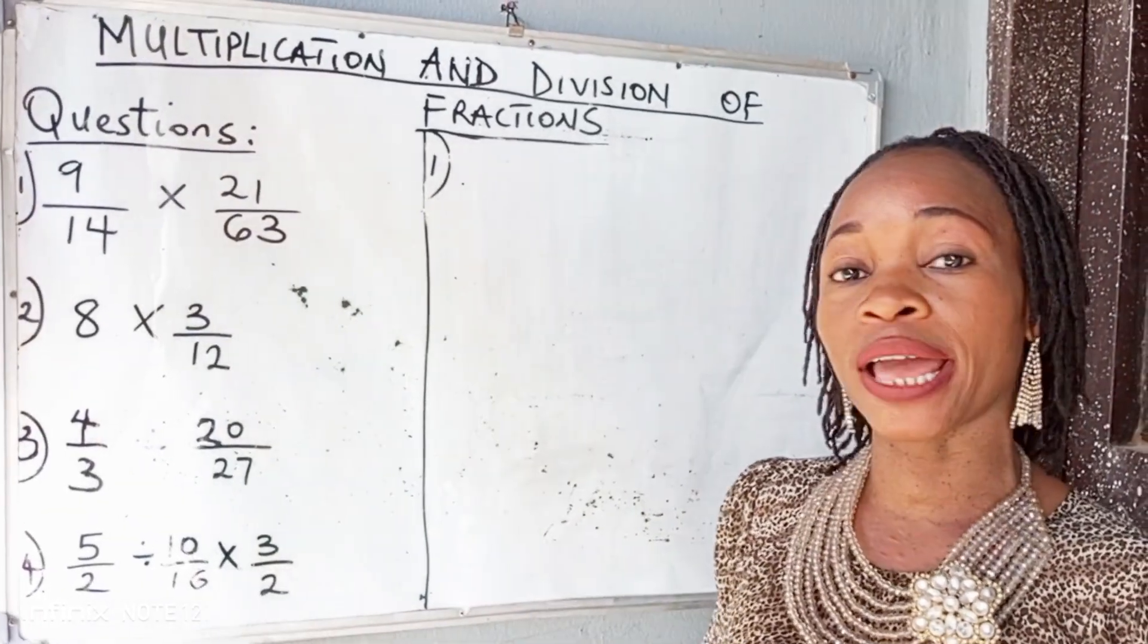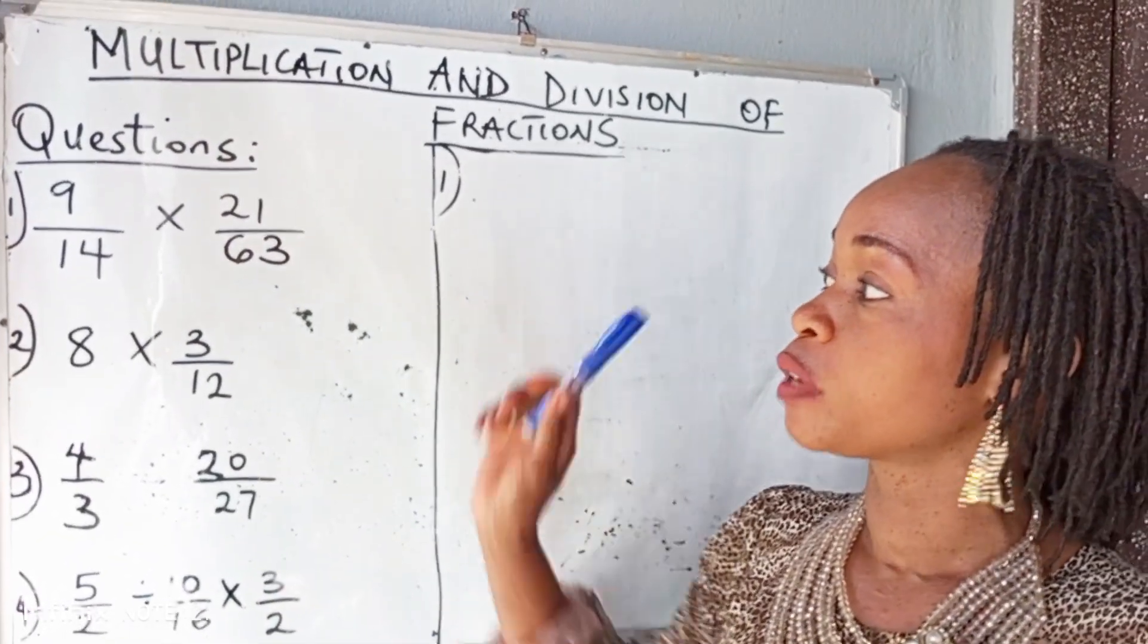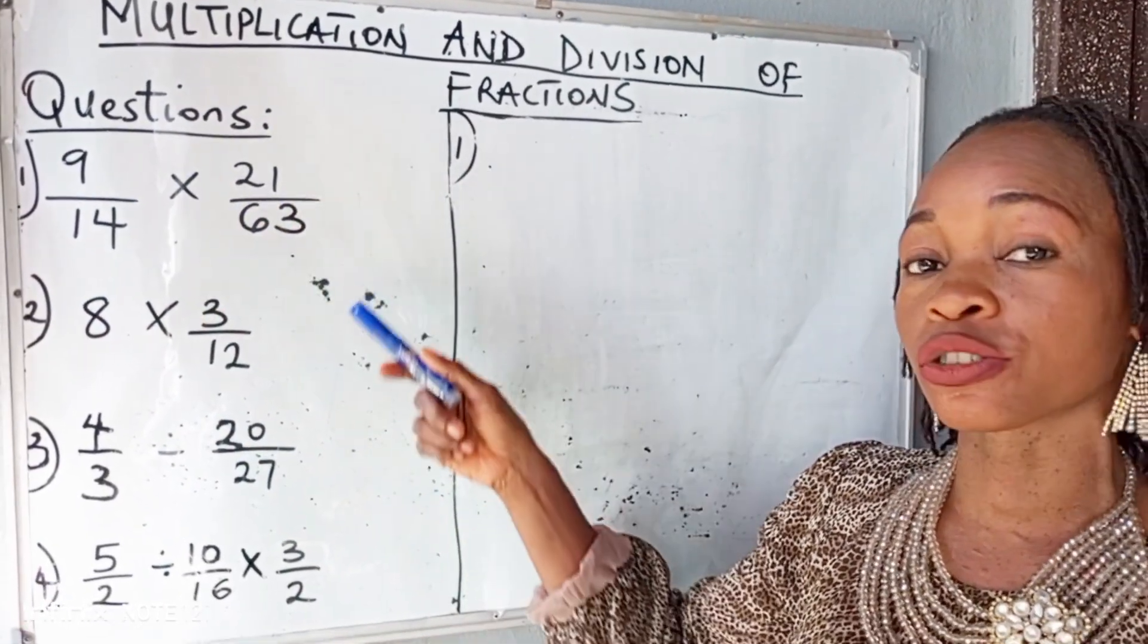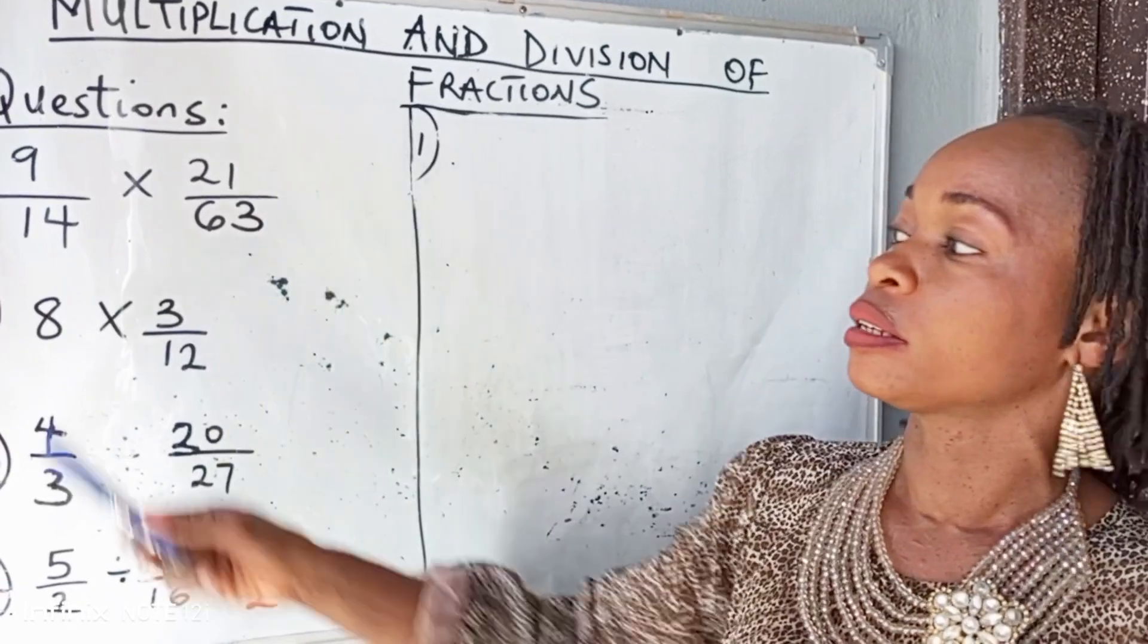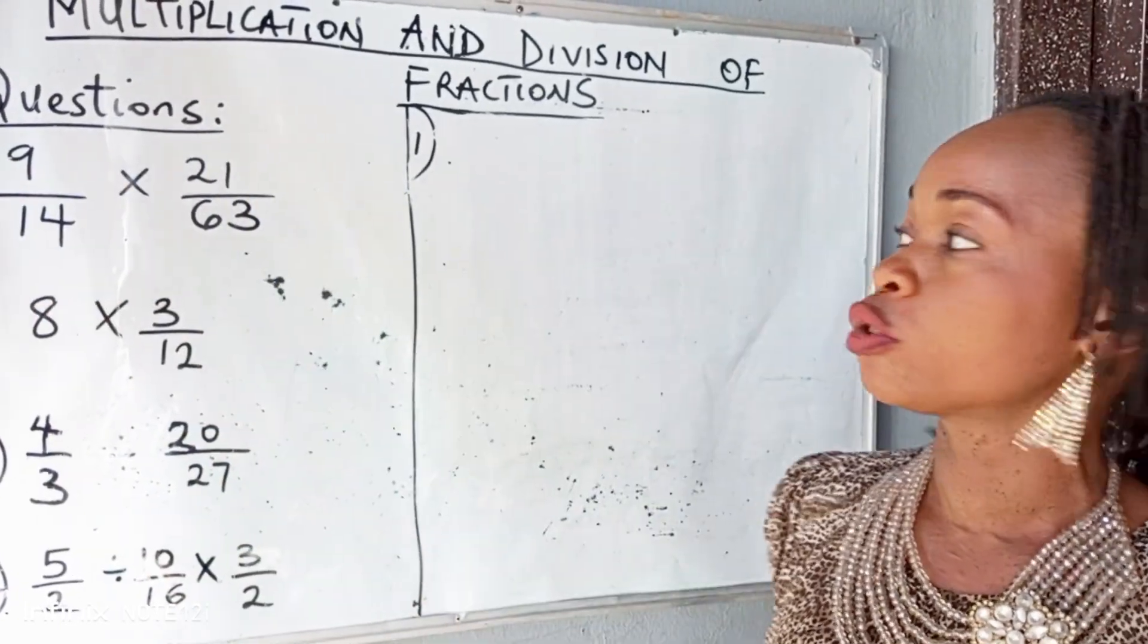In my previous video, I explained that the first way of solving multiplication is to reduce the fractions to their lowest term before you multiply your numerator, numerator, denominator, and denominator. So let's solve.